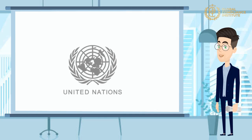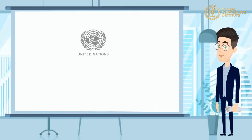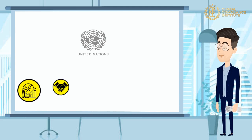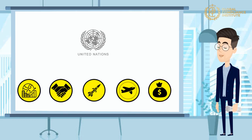Firstly, we will discuss the United Nations imposed sanctions. The Security Council sanctions have taken a number of different forms in pursuit of a variety of goals. The measures have ranged from comprehensive economic and trade sanctions, to more targeted measures such as arms embargoes, travel bans, and financial or commodity restrictions.